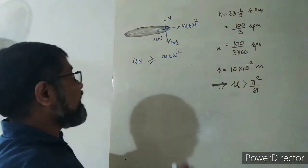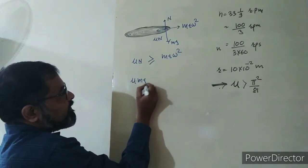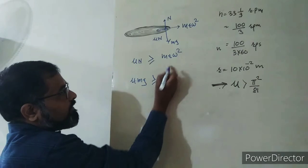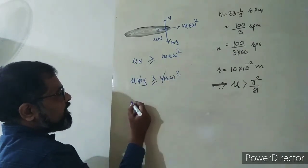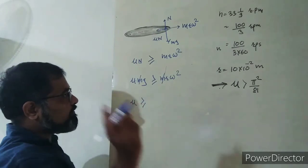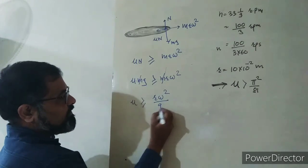So N = mg. Putting the value of N as mg: μmg should be greater than or equal to the centrifugal force. Mass m cancels out, so μ should be greater than or equal to r ω²/g.